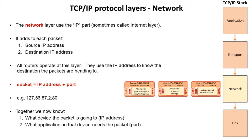It's also important to understand what we mean by a socket. An IP address — the destination IP address — plus the port number together makes a socket. Once you have a socket, when you receive a packet you know what device the packet is going to — that's the IP part — and you also know what application on that device needs the packet — and that's the port. We're going to look a little bit more at ports in some subsequent videos in this section.